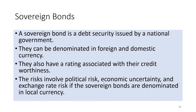A sovereign bond is a debt security issued by a national government. They can be denominated in foreign and domestic currency. Just like other bonds, the issuers of sovereign bonds promise to pay the investor a certain amount of interest for a stipulated number of periods and repay the face value on maturity. Sovereign bonds also have a rating associated with their creditworthiness. Bondholders demand higher yields from riskier bonds. The risk involves political risk, economic uncertainty, and exchange rate risk if the bonds are denominated in local currency. The government of a country with an unstable economy tends to denominate its sovereign bonds in the currency of a country with a stable economy.